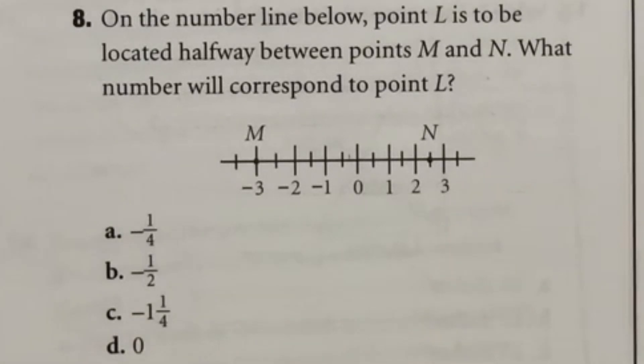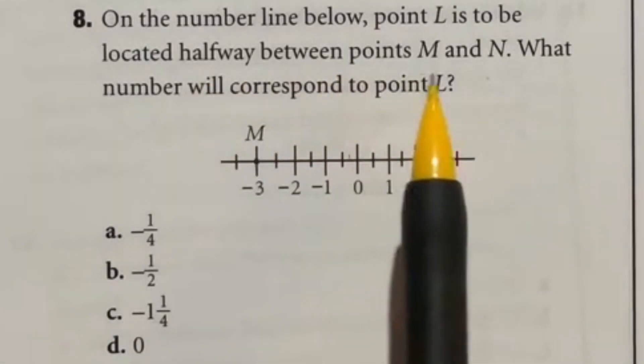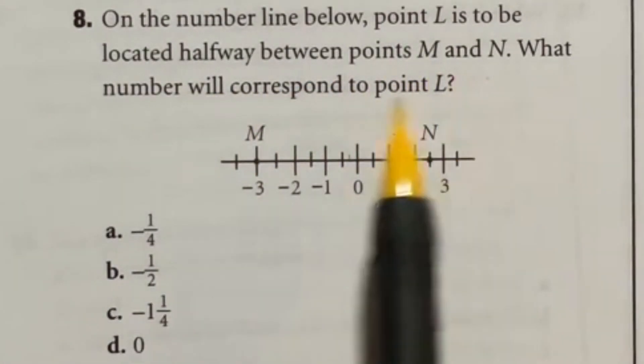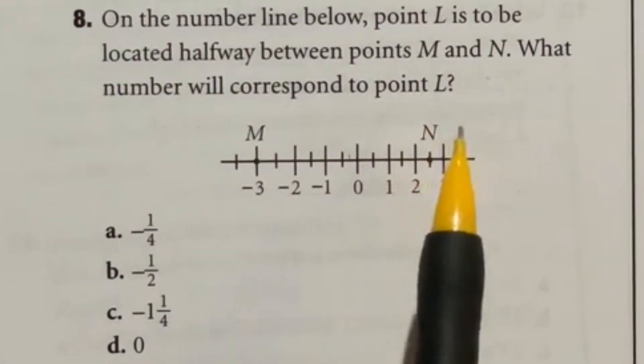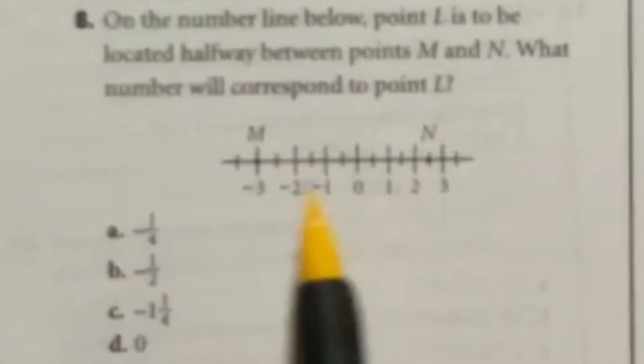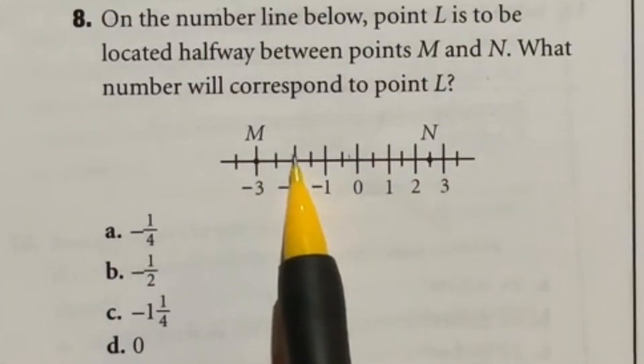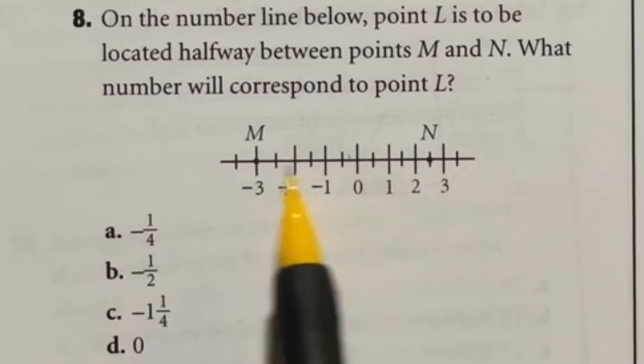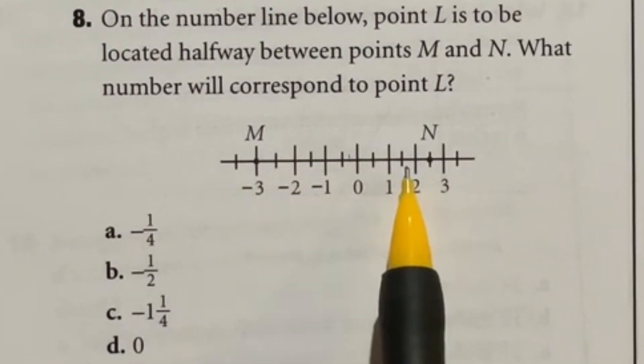So number eight here is breaking down a number line. It says here on the number line which point L is to be located halfway between M and N. What number would be point L? So first off, these are jumping by halves right here. Let's see how many we have. We have one, two, three, four, five, six, seven, eight, nine, ten, eleven halves between them, meaning half of eleven would be five and a half.